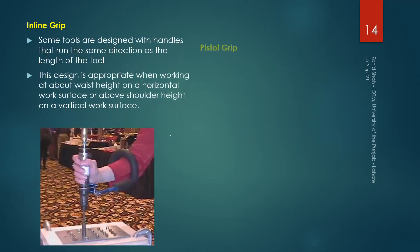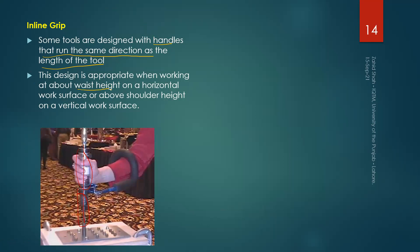First we will look at the cylindrical or inline grip. The handle axis runs along the body of the tool. Some tools are designed with handles that run in the same direction as the length of the tool. This design is appropriate when working at about waist height on a horizontal work surface, as shown in the figure.